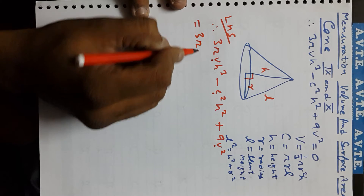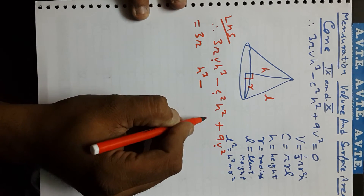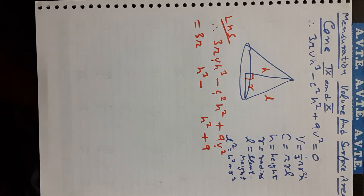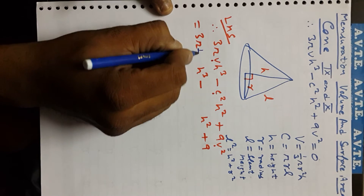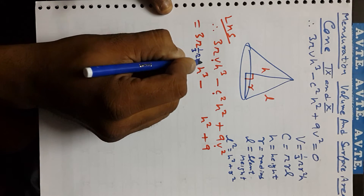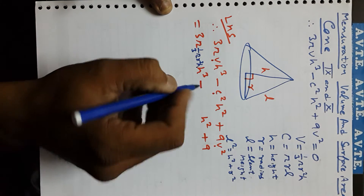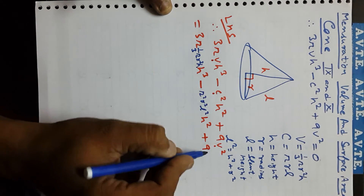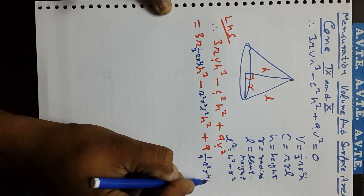This becomes 3π × (1/3)πr²h × h³ minus (πrl)² × h² plus 9 × (1/3)²π²r⁴h². C² is π²r²l², and V² is π²r⁴h²/9.